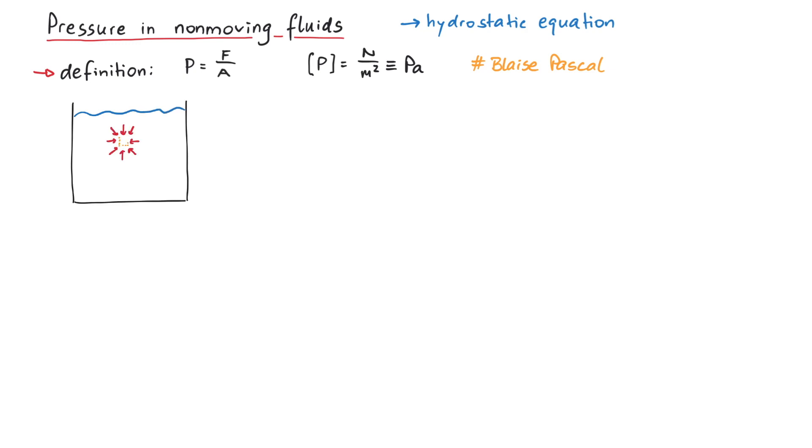To see this, look at this infinitesimally small volume of fluid. It does not move, so the net force acting on this volume is zero. This means the force from the left is the same as the force from the right, and so on.